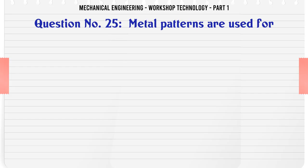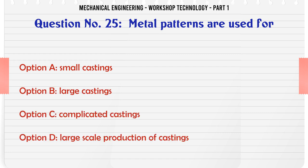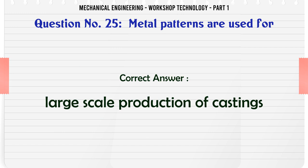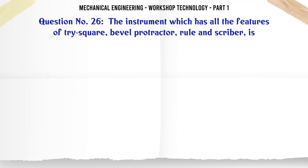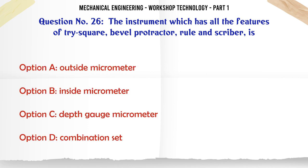Metal patterns are used for: A. Small castings. B. Large castings. C. Complicated castings. D. Large scale production of castings. The correct answer is: Large scale production of castings.